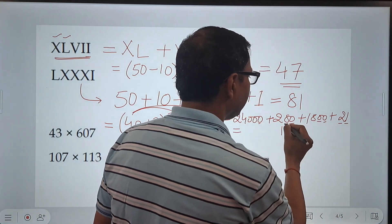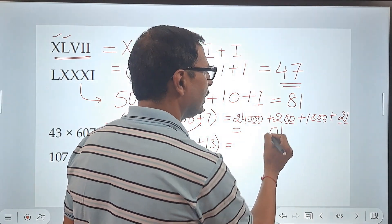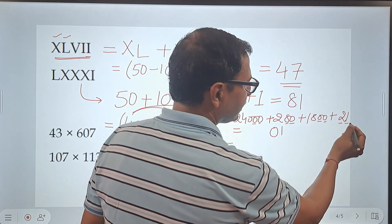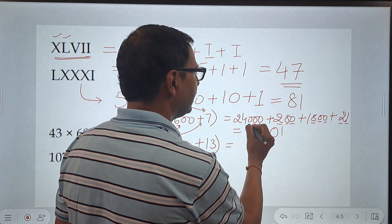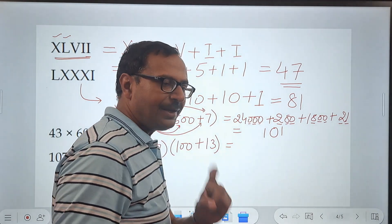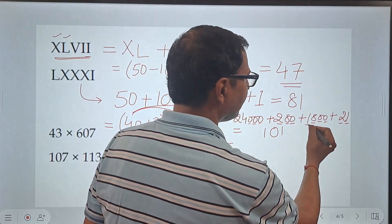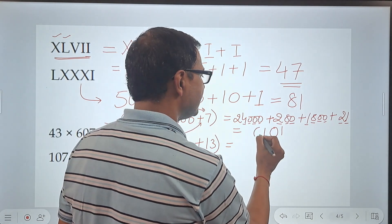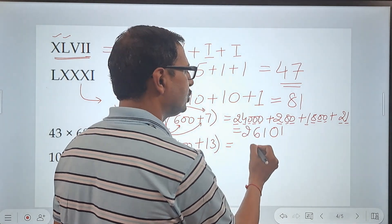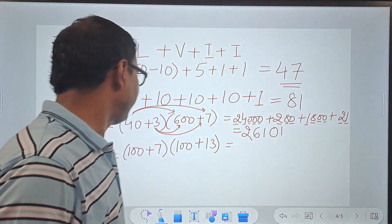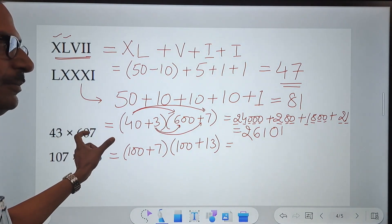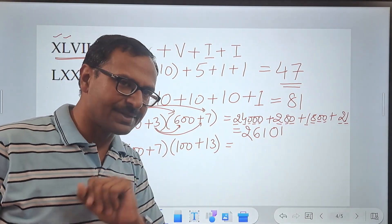2, 0, 8 is 10. 10 means 0, a 1 carry. 3rd digit, 8 plus 1, 9. Then 11. 11 means 1 and a 1 carry. 4th digit, 1 plus 1, 2 plus 4, 6. And finally, we have this 2. So 2, 6, 1, 0, 1 is the product of 43 and 607. Distributive property works here for us.